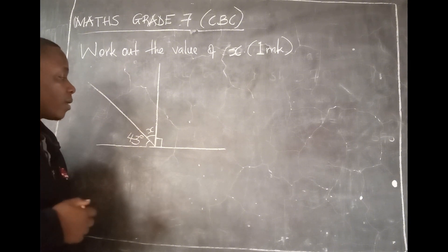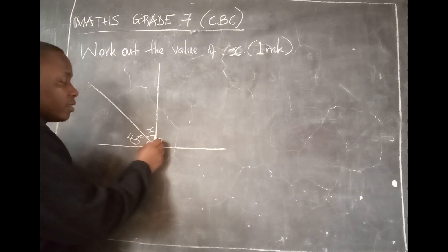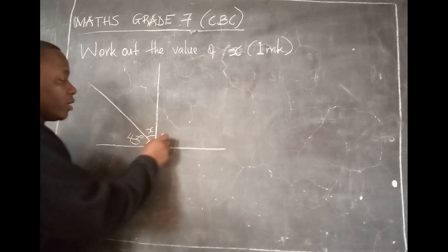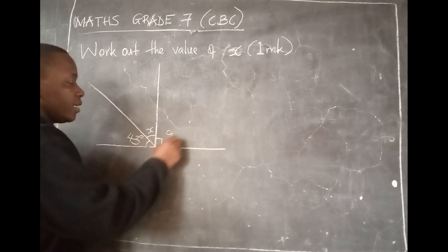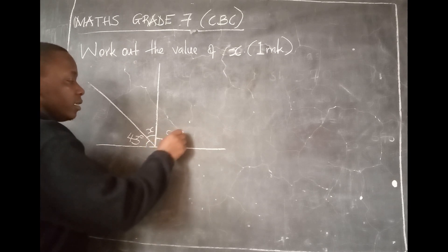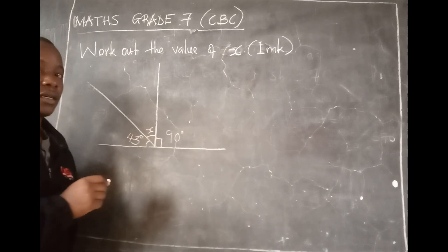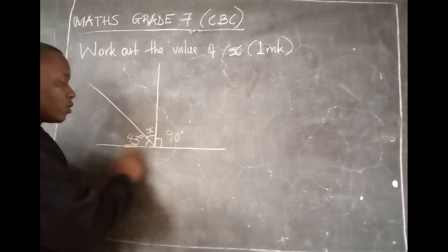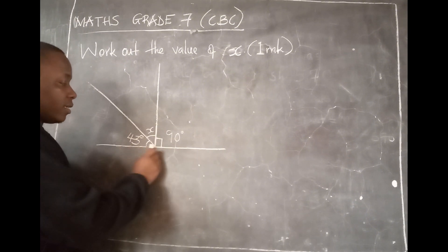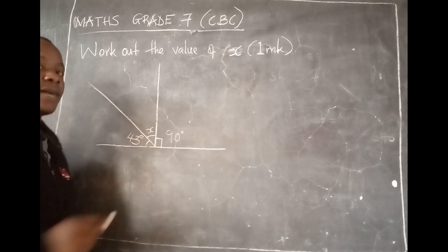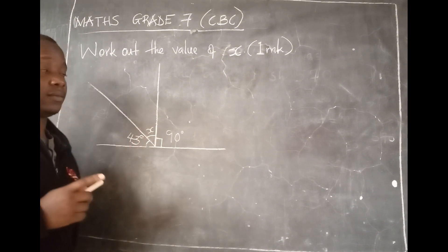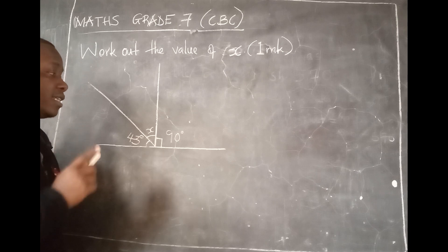Now, this symbol means 90 degrees. So, you write here 90 degrees. Then, you have to know that angles in a straight line all should add up to 180 degrees.